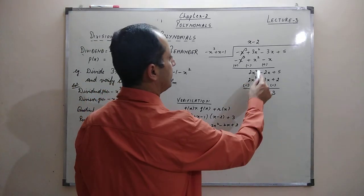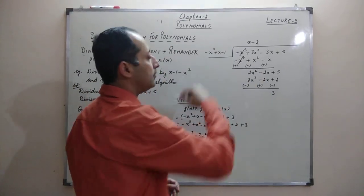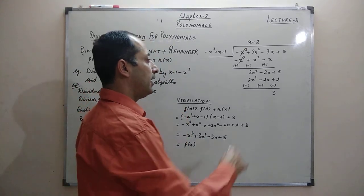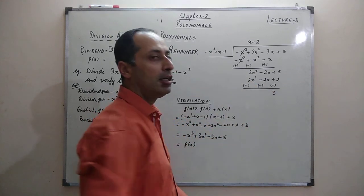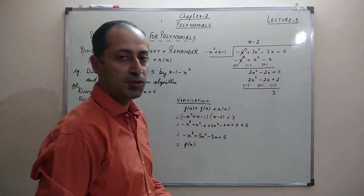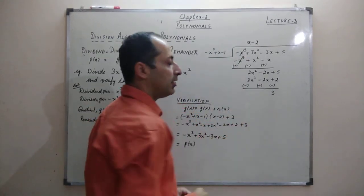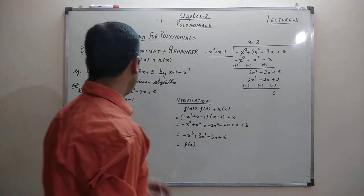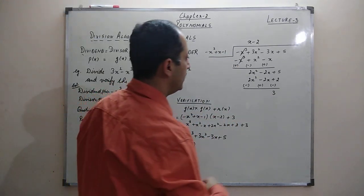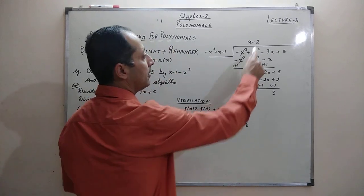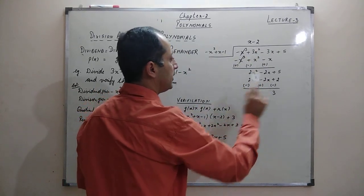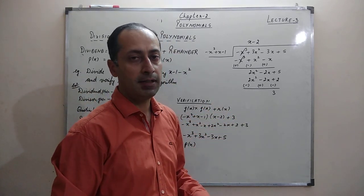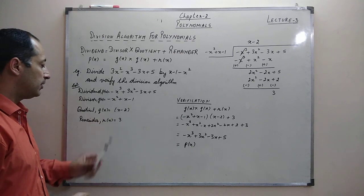Again I check the first term. By what number should I multiply -x² to get 2x²? That is -2, so I write -2 on top. Multiplying the complete divisor by -2 gives 2x², then -2 × x = -2x, and -2 × (+1) = +2. After changing signs and subtracting, the remainder comes out as 3. So the quotient is x - 2 and the remainder is 3.